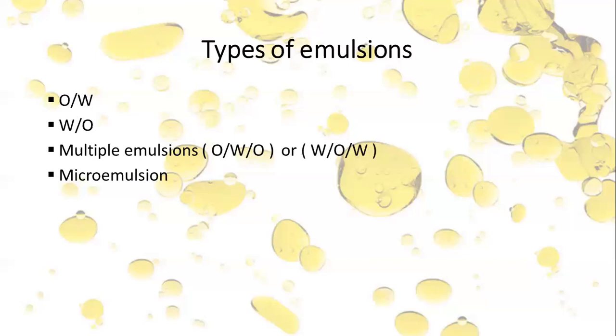So now depending on the globule size, emulsions are empirically classified. They are as follows, like microemulsion. Microemulsions contain globules of the size about 0.01 micrometer. Please note down this globule size: 0.01 micrometer.